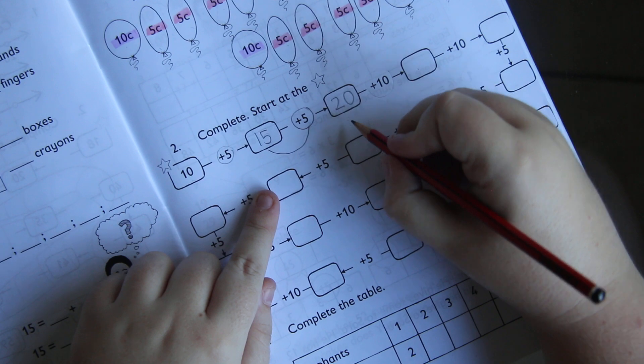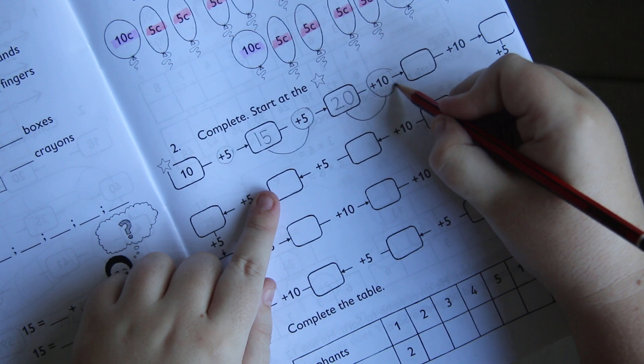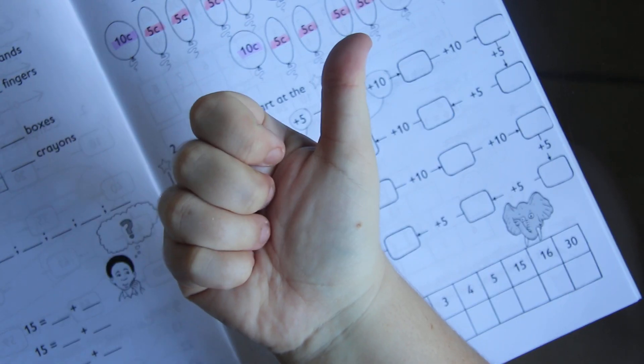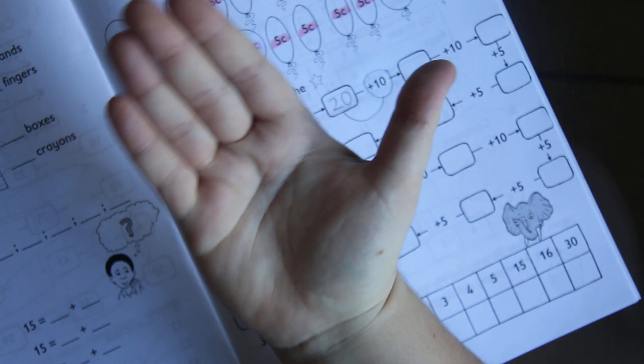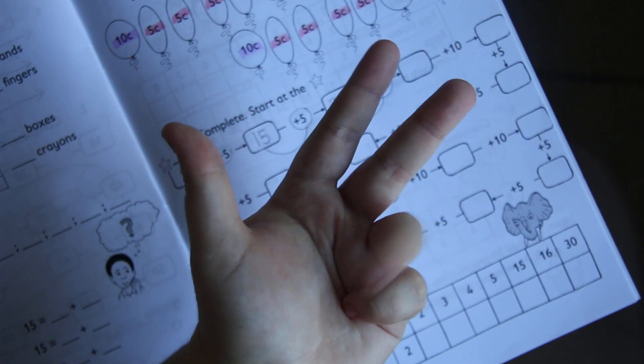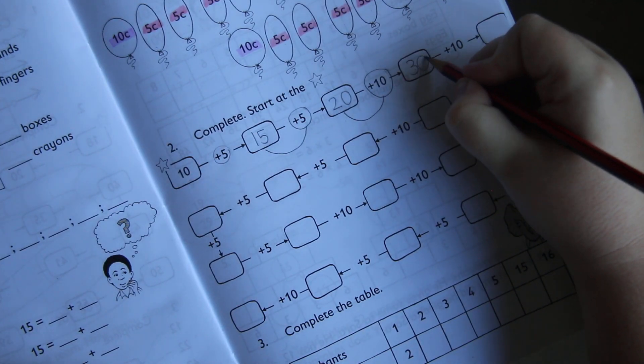Then the next one you say, 20 plus 10. What is 20 plus 10? 21, 22, 23, 24, 25, 26, 27, 28, 29, 30. 20 plus 10 is 30.